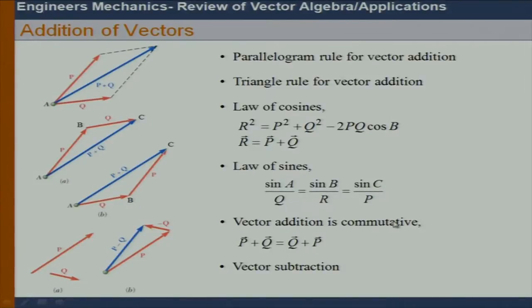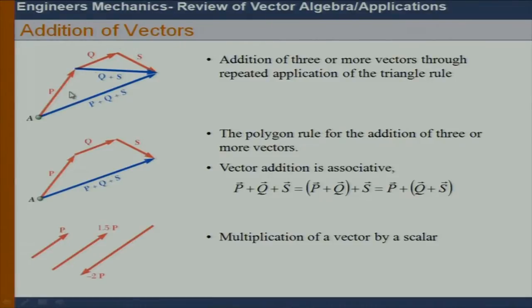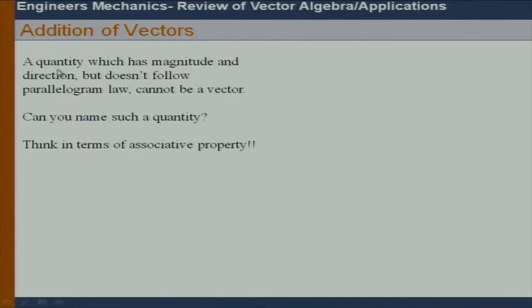Vector addition is commutative — this is very important. It does not matter how I go: P plus Q should equal Q plus P. If that is not the case, I cannot say it's a vector. We can use these rules repeatedly when we have more than two vectors, so we can get P plus Q plus S that way. A quantity which has magnitude and direction but does not follow the parallelogram law cannot be a vector.